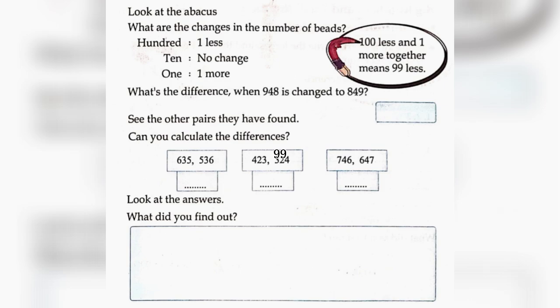See the other pairs they have found. Can you calculate the difference? 635 minus 536 is equal to 99. 423 minus 324 is equal to 99. 746 minus 647 is equal to 99. Look at the answers. What did you find out? When 100 less and 1 more together, it always means 99 less.